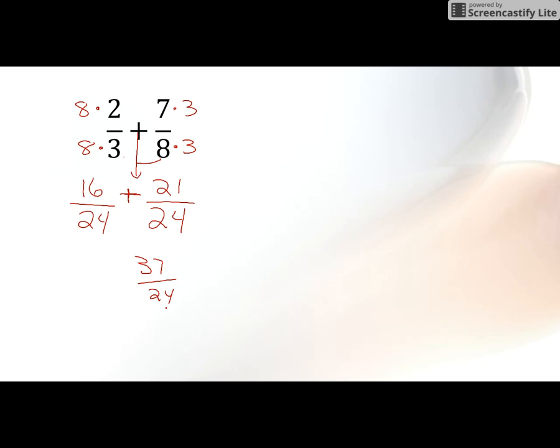About 37 24ths. Remember, you don't add the bottom. 37 24ths isn't proper. So I take 37 and divide it by 24. It goes in one time, 13 left over. So my mixed number is 1 and 13 24ths. That's my final answer to this.